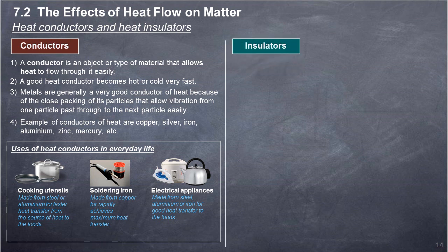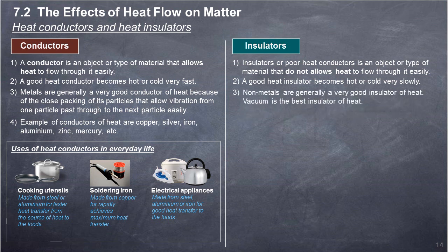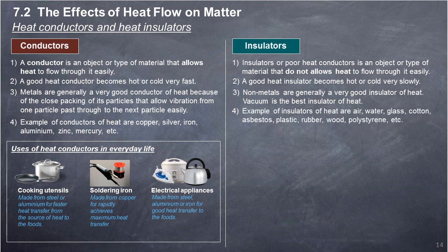Insulators, or poor heat conductors, are objects or types of materials that do not allow heat to flow through them easily. A good heat insulator becomes hot or cold very slowly. Non-metals are generally very good insulators of heat. Vacuum is the best insulator of heat. Examples of insulators: air, water, glass, cotton, asbestos, plastic, rubber, wood, polystyrene, etc.